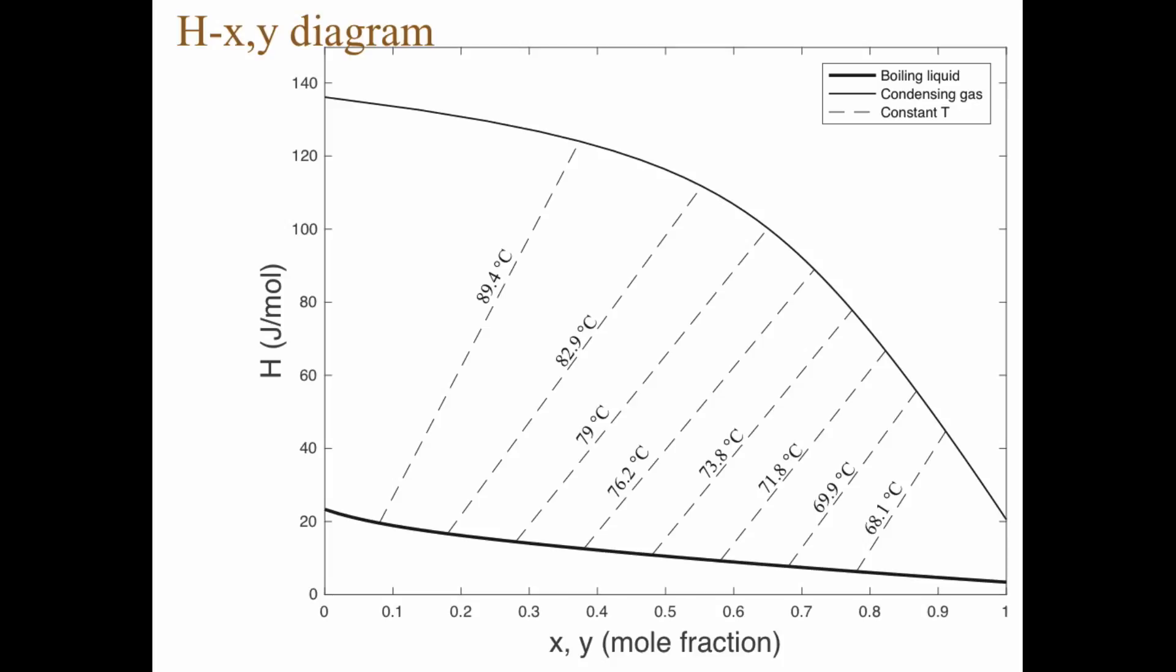So 20 percent. If we evaporate everything, then the gas and the liquid has the same composition. So we just go straight up and compare the value down here, the enthalpy for the boiling liquid with the enthalpy for the condensing gas.